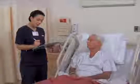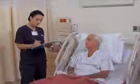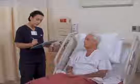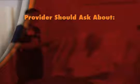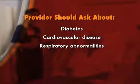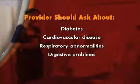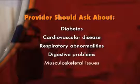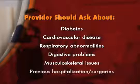A medical history has numerous components. The provider should ask about past or present systemic illnesses such as diabetes, cardiovascular disease, respiratory abnormalities, digestive problems, or musculoskeletal issues. The provider should also inquire about previous hospitalizations and surgeries.